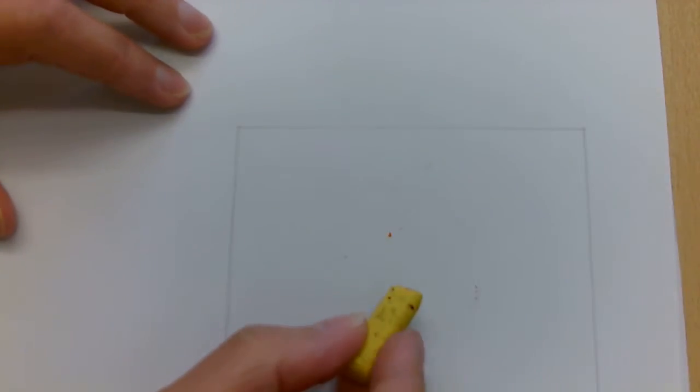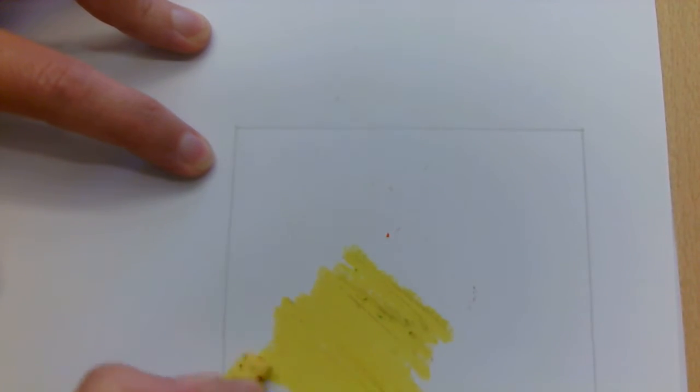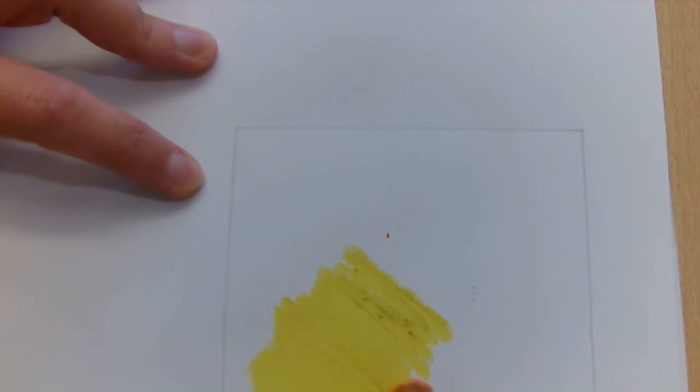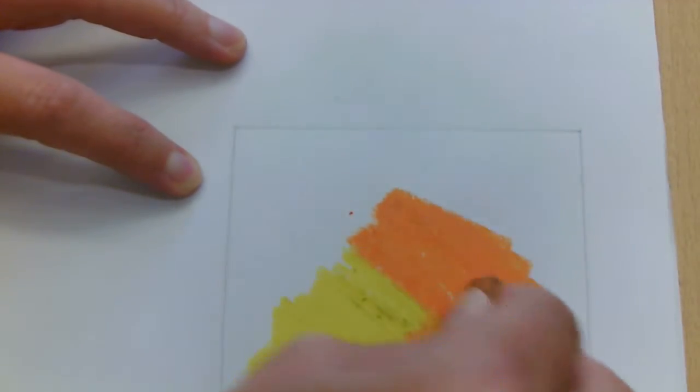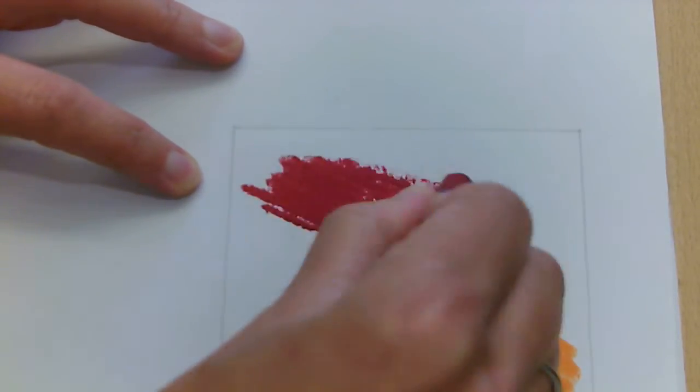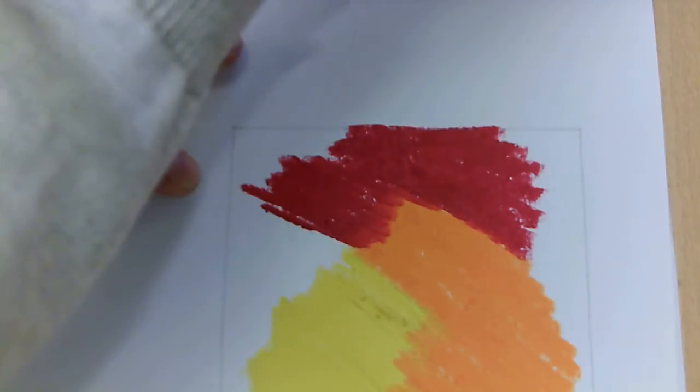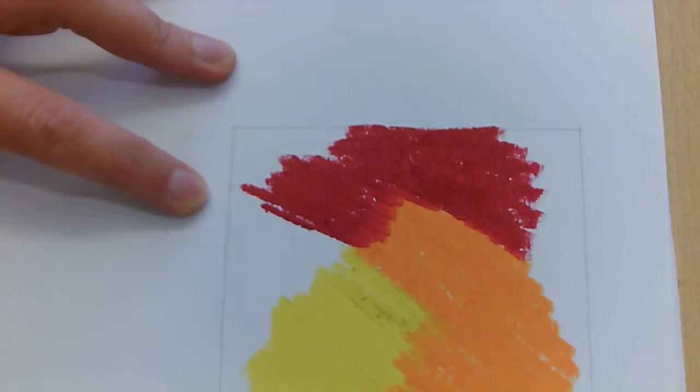Now the trick is to press really hard with the oil pastel because when you scratch through you don't want to scratch through onto paper, you want it to actually be onto the oil pastel underneath the layers. And the other thing is you want to choose lots of nice bright colors because that's going to show up much better than if you've chosen really dark colors. So you can see I'm pressing really hard.